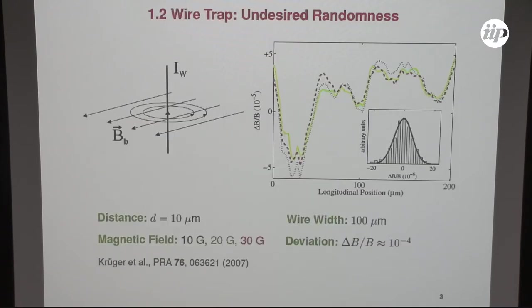This disorder can also appear in an undesired way. Here is an example of a wire trap in the former Schmiedmayer group in Heidelberg. The idea is that you have a current running through the wire, giving rise to circular magnetic field lines, and if you impose an additional magnetic field, then you see at a certain distance of the wire a nice trap. The question is, what is the deviation of the magnetic field once one goes parallel to the wire? It turns out that this wire has some imperfection, some roughness in the surface. This translates itself in a variation. It's quite small, 10 to the minus 4, 10 to the minus 5, but it is measurable. It is there, so it's just an undesired randomness.